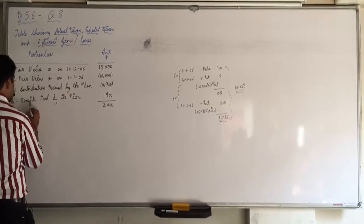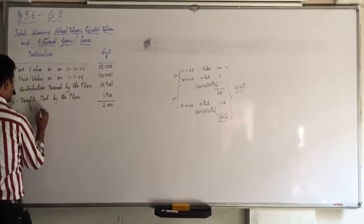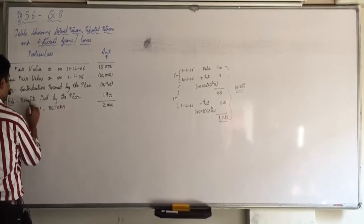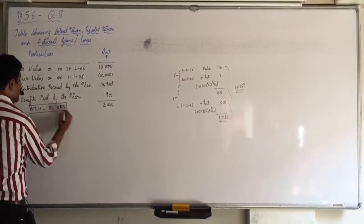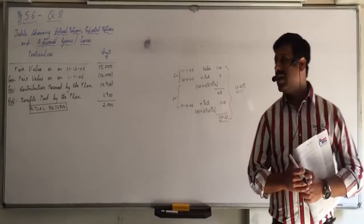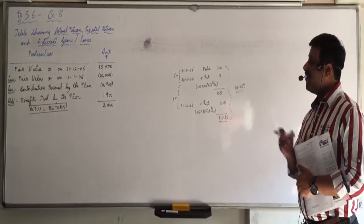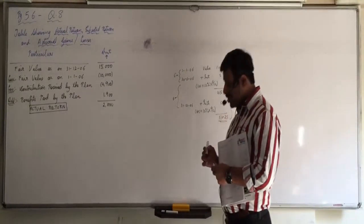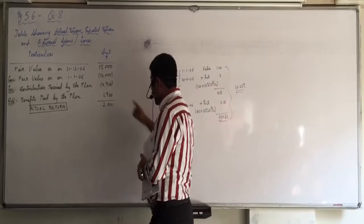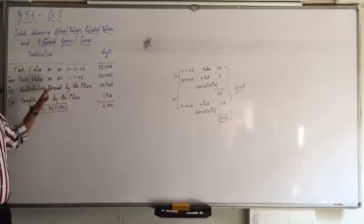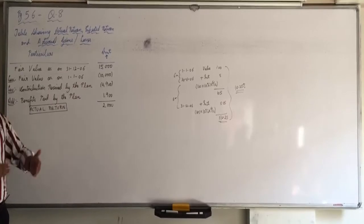Actual return. So actually you have received a return of rupees 2000. Actual benefit is 2000. And it is quite logical. 15,000 was the value at the end. How much was the value in the beginning? 10,000. Further you have invested 4900.